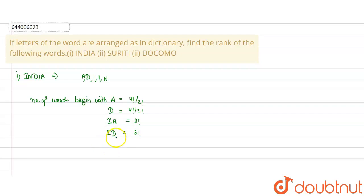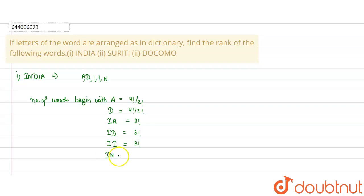Words with prefix ID give 3 factorial, since 3 terms remain. We don't want D, so we try II. Words beginning with II give 3 factorial. We don't want II either, so we move to IN. After IN, A comes next alphabetically.